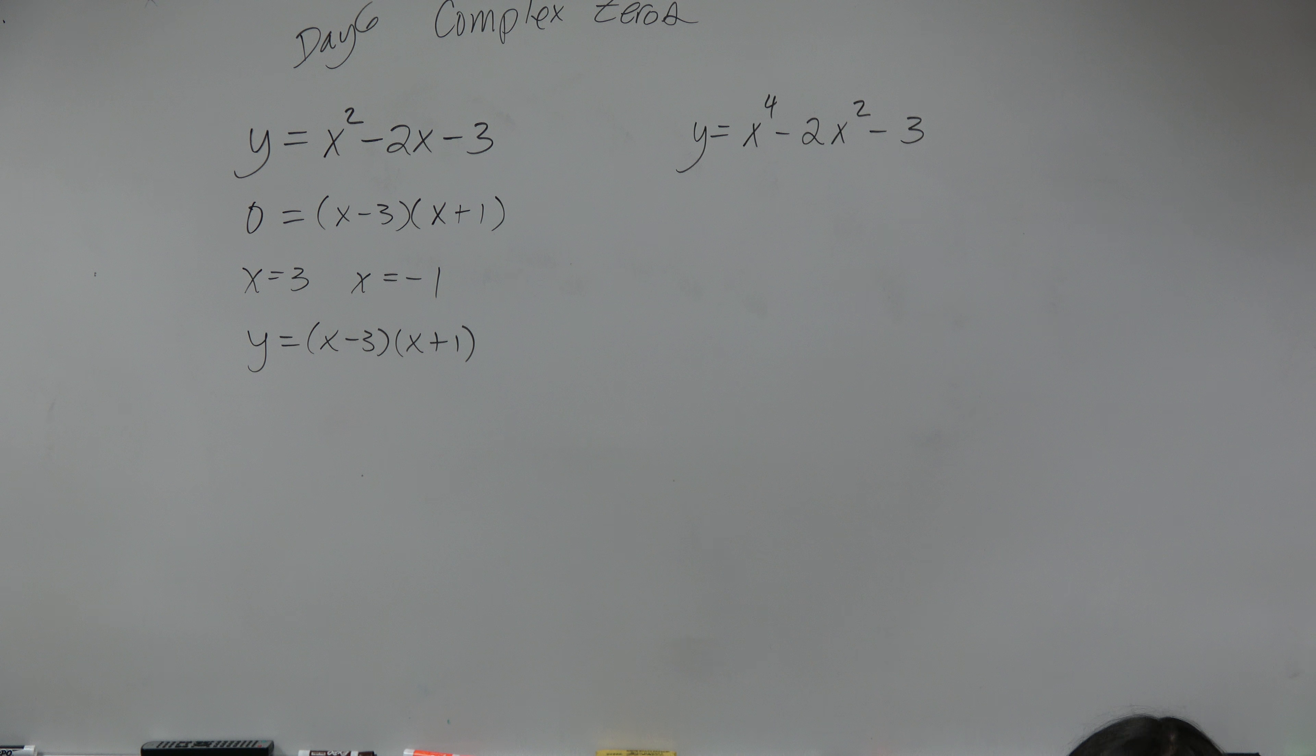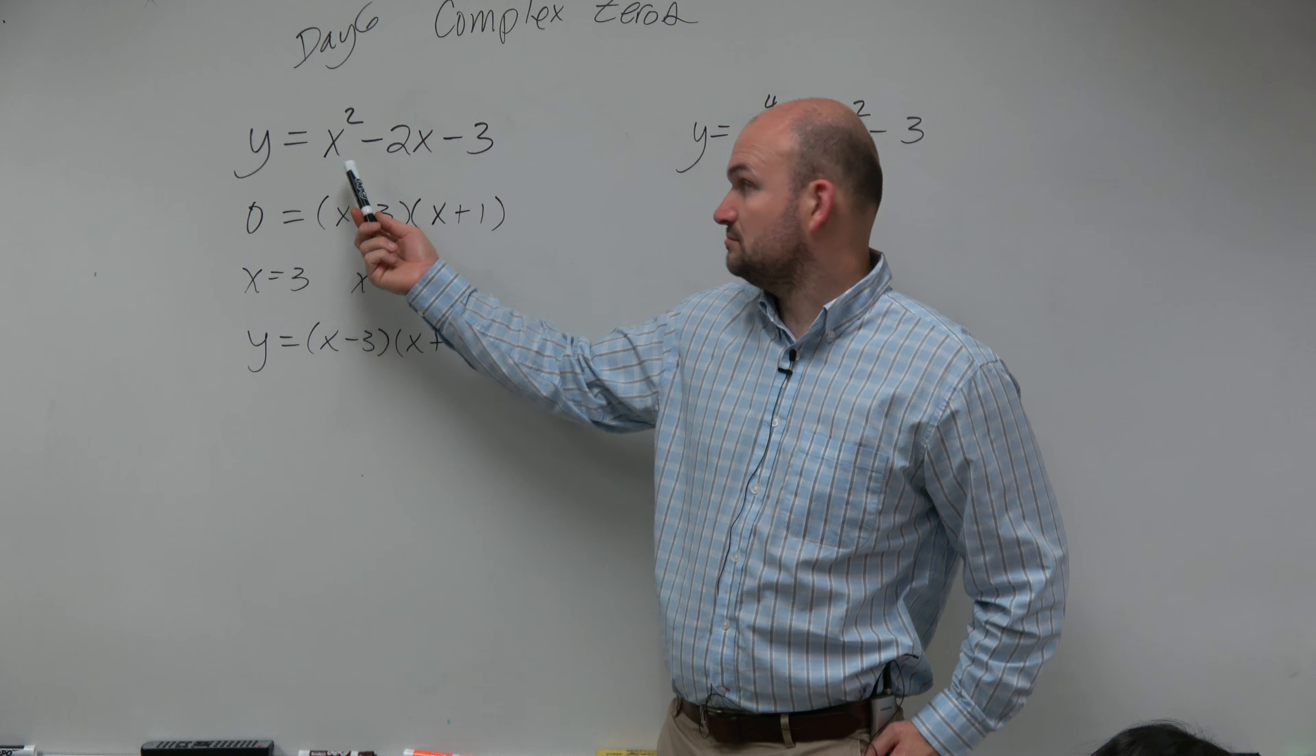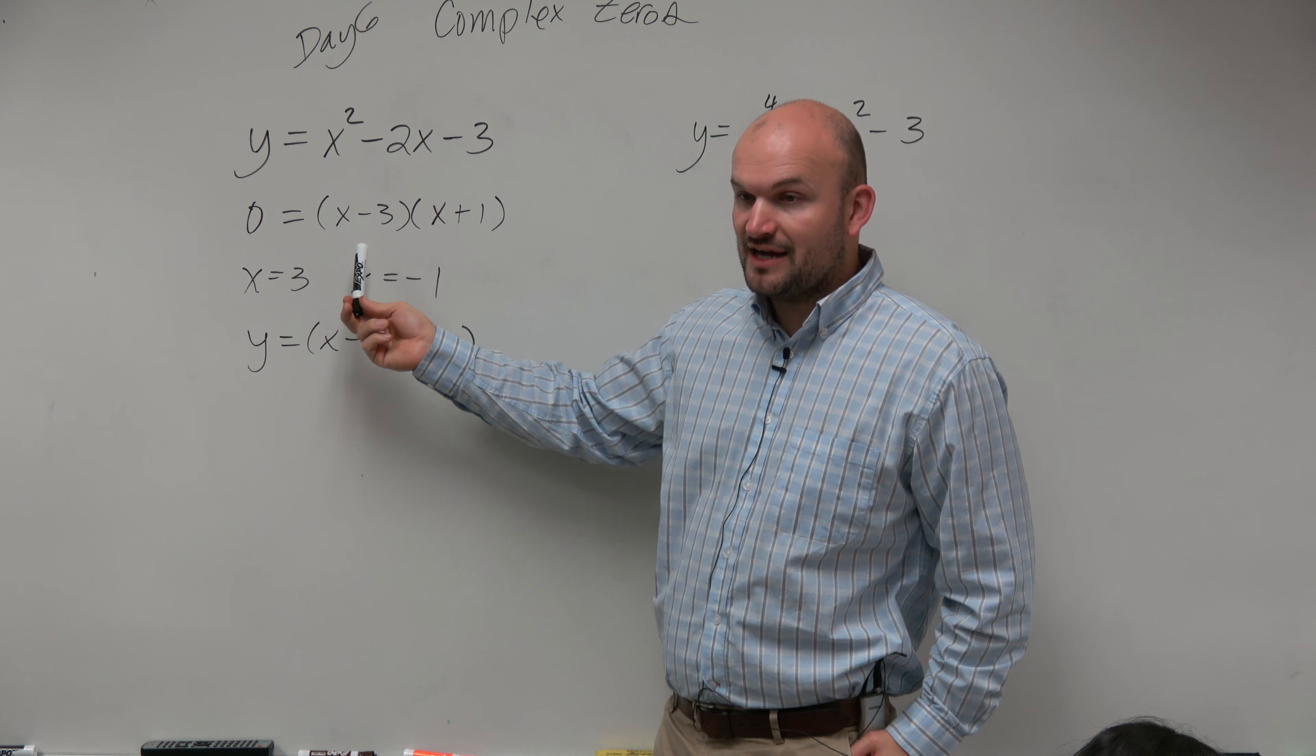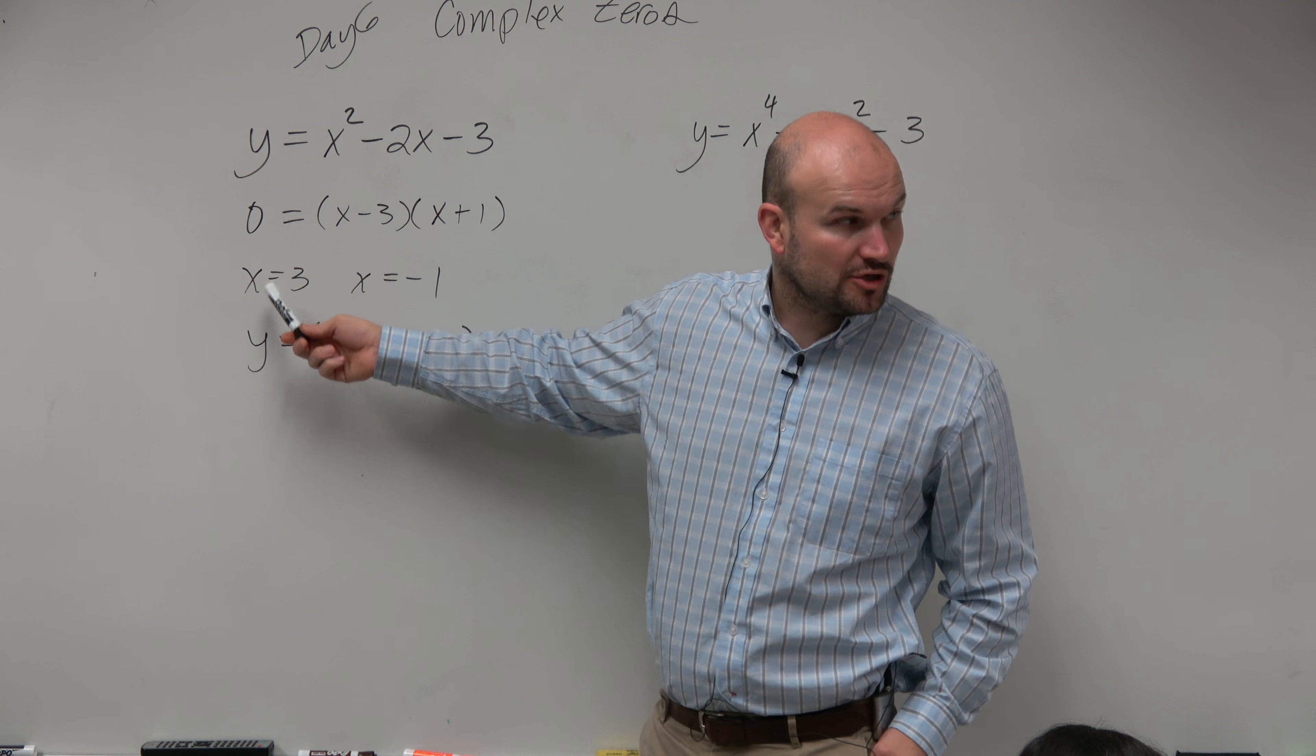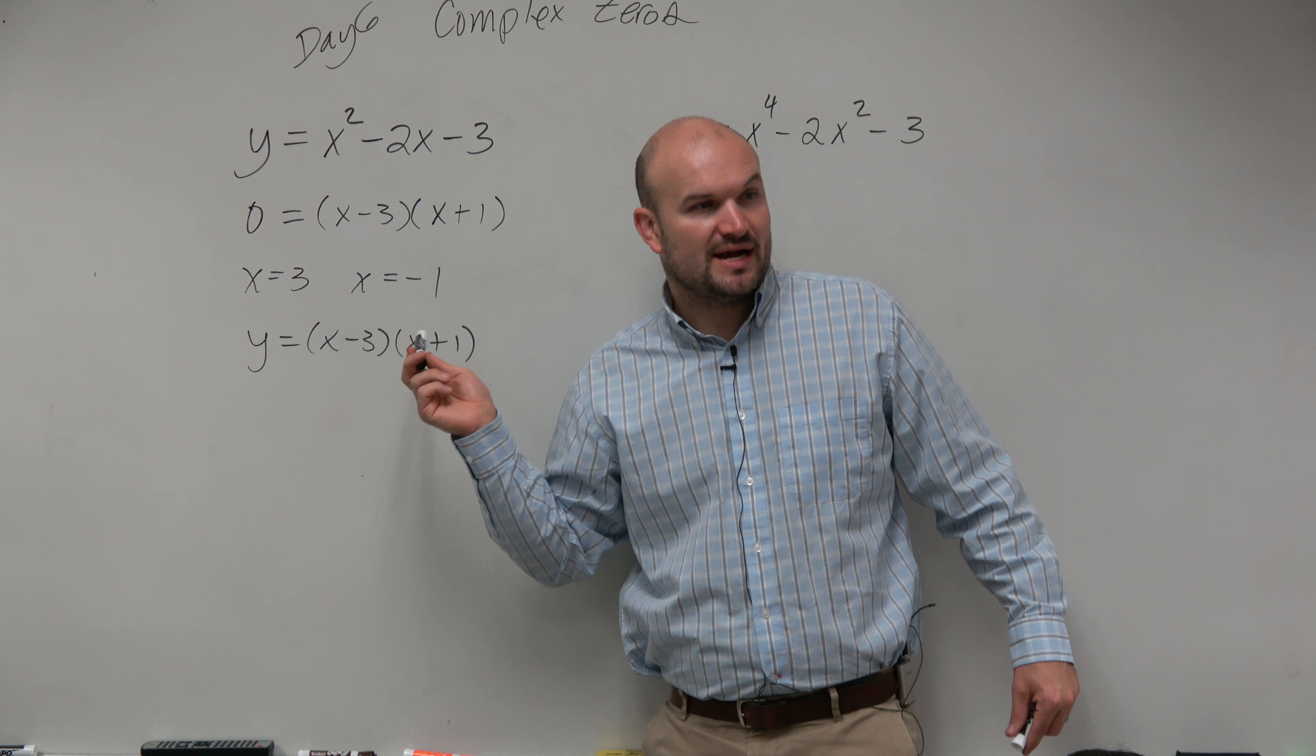So looking at this one, guys, this one, usually most students are like, all right, I understand this. I understand taking a quadratic, factoring it, setting it equal to zero, applying the zero product property, solving, and getting my two zeros, and then possibly rewriting it back in factor form.